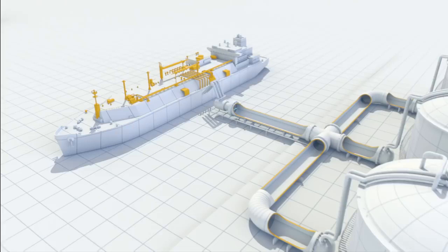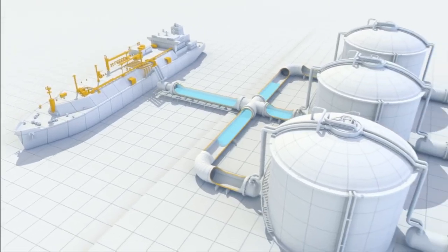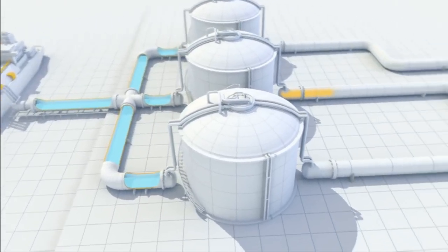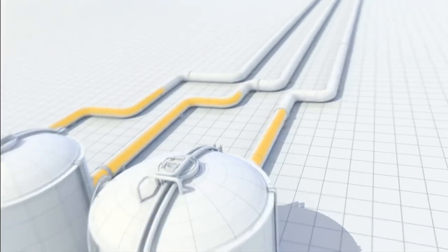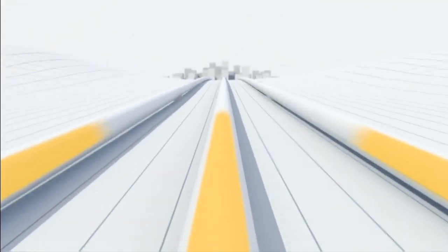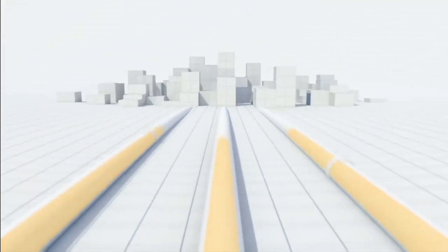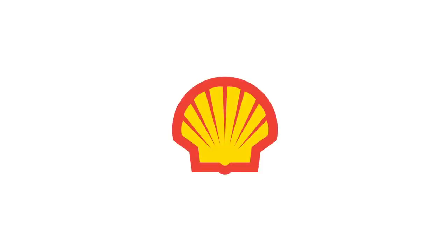When the ship arrives at its destination, the LNG is transferred to a regasification plant where it is heated, returning it to its gaseous state. The gas is then transported via pipelines to customers, providing energy for homes and industry. Shell continues to help meet growing energy demand with cleaner burning natural gas.